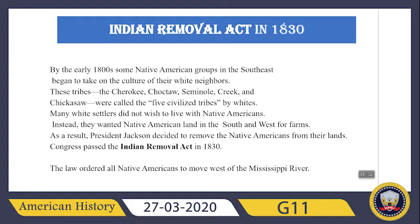Next is the Indian Removal Act of 1830. By the early 1800s, some Native American groups in the southeast began to take on the culture of their white neighbors. These tribes — the Cherokee, Choctaw, Seminole, Creek, and Chickasaw — were called the five civilized tribes by the whites. Many whites did not wish to live near Native Americans; instead they wanted their land in the south and west for farms. As a result, President Jackson decided to remove the Native Americans from their lands.